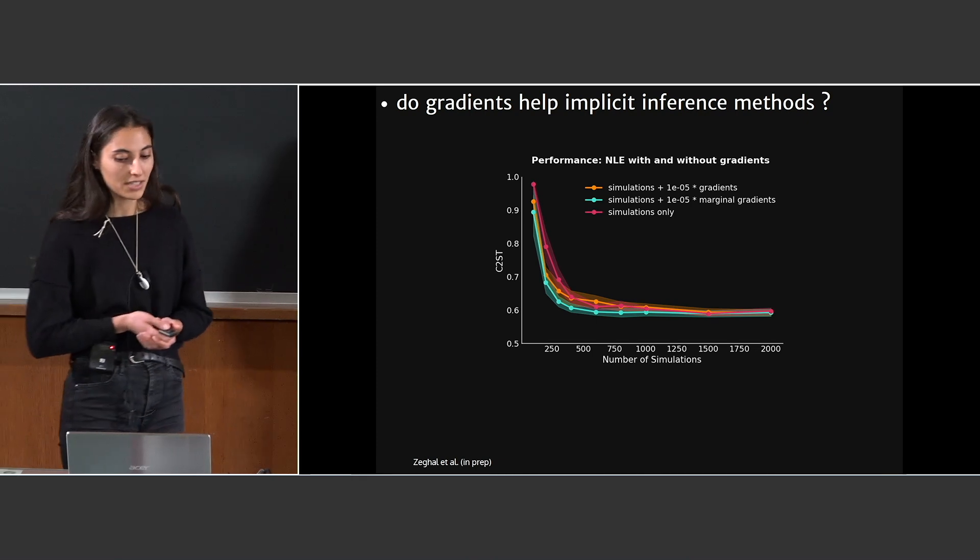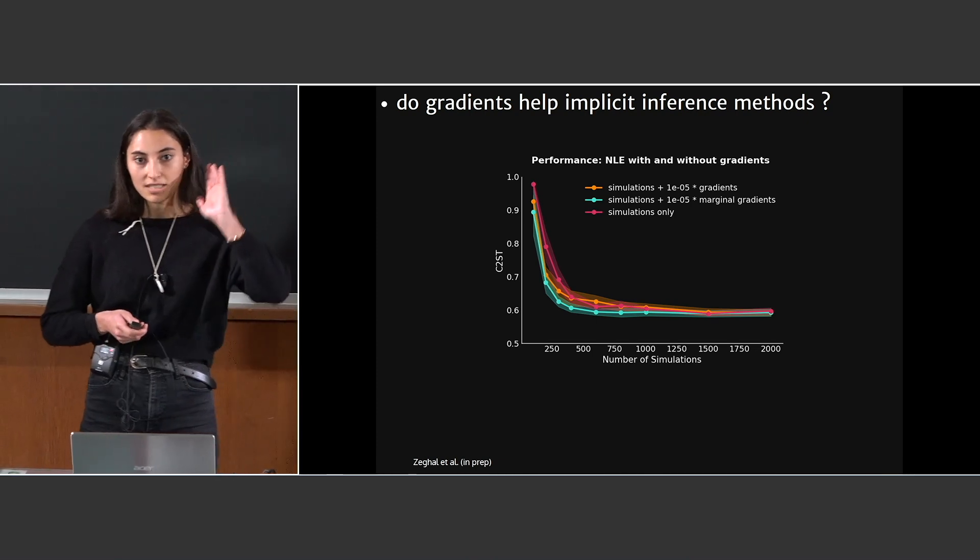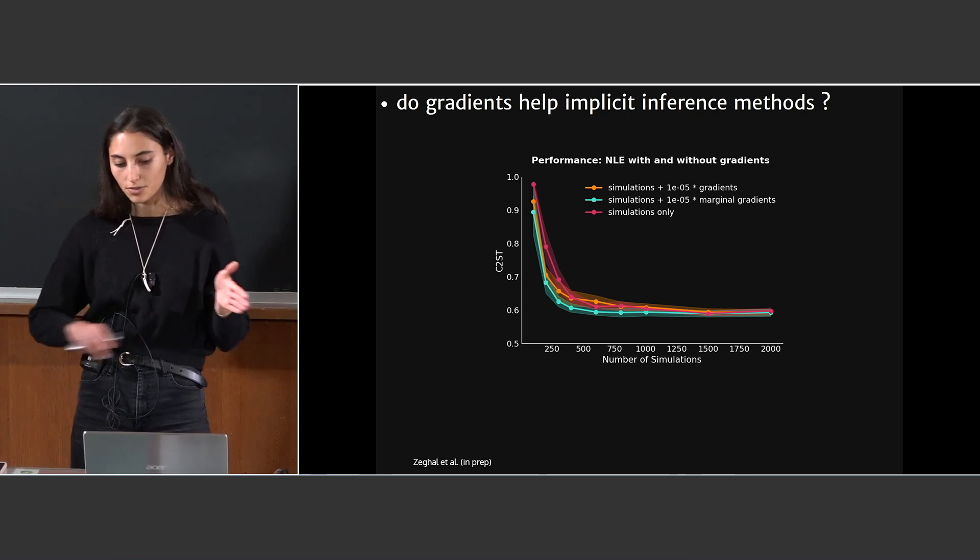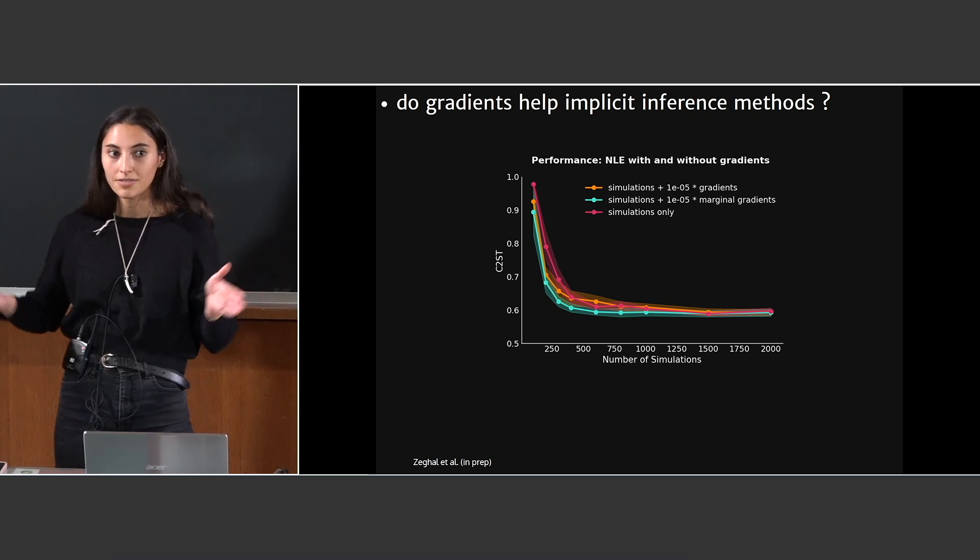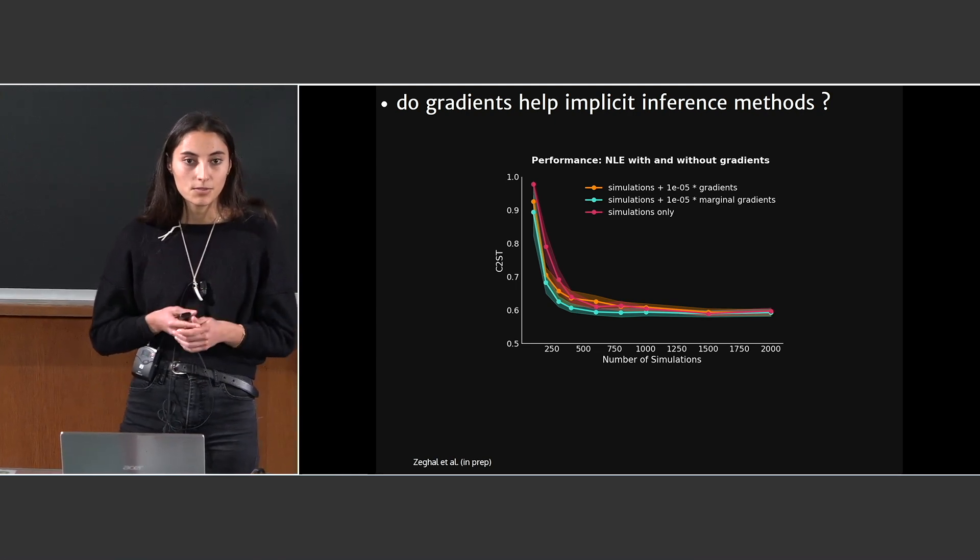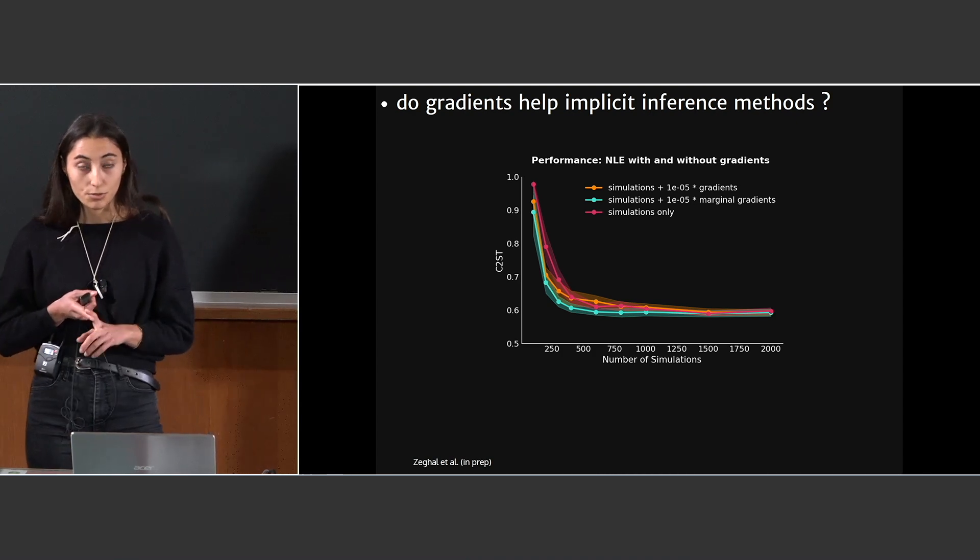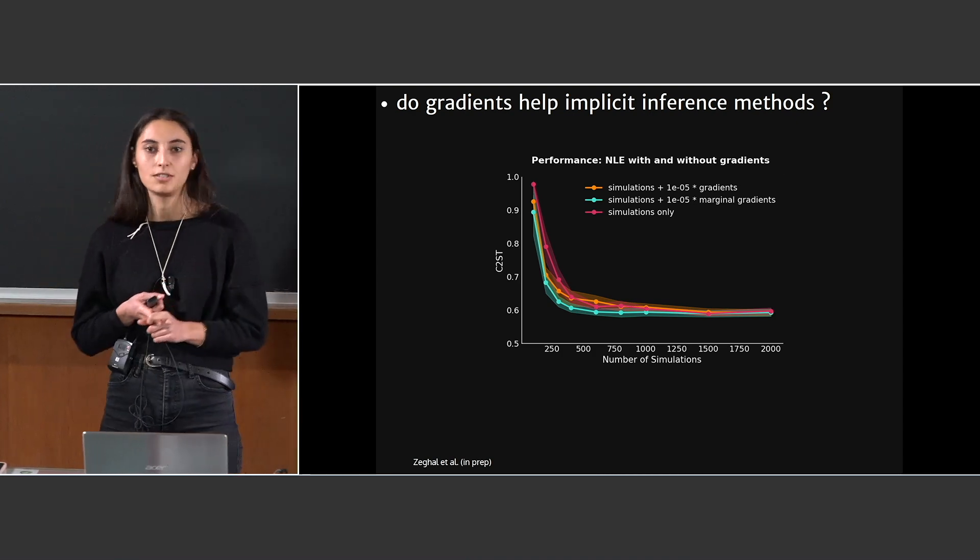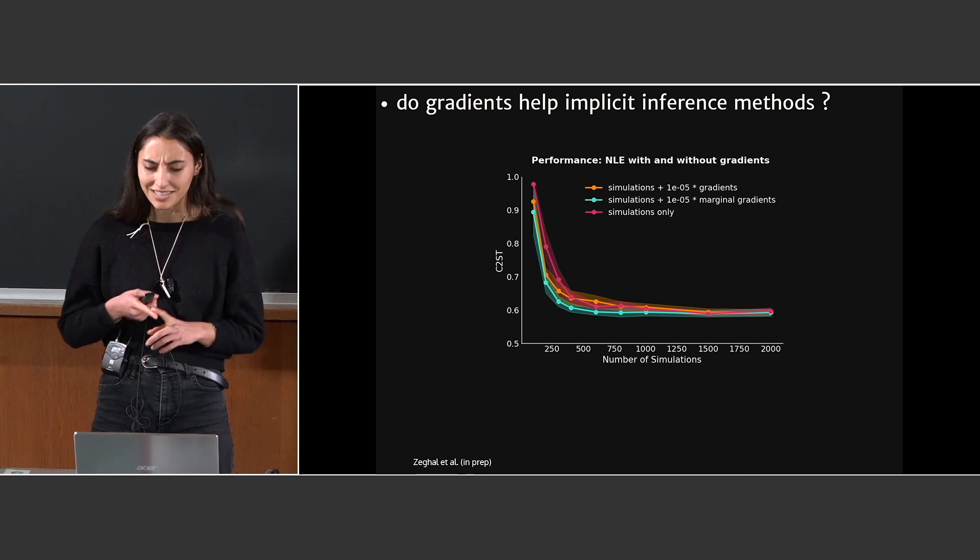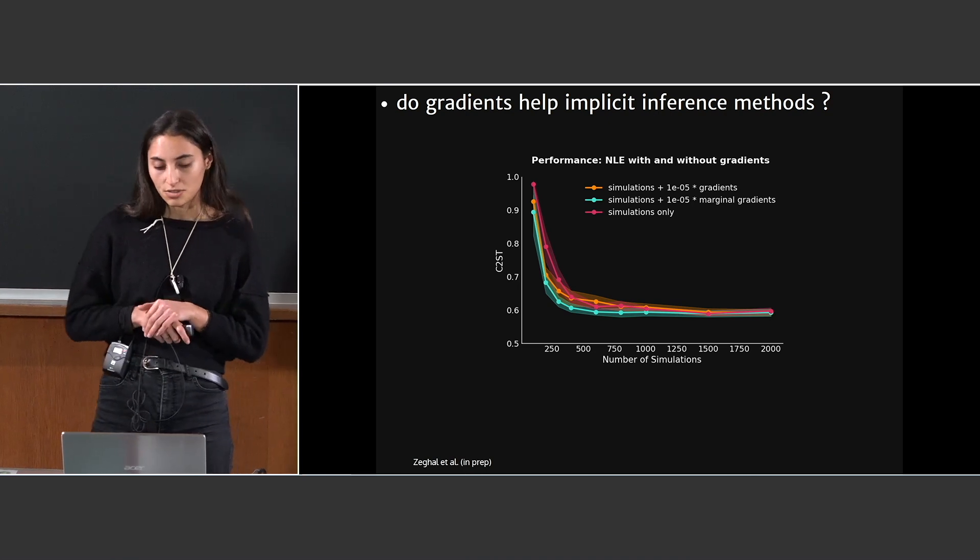The first result is this convergence plot. This is basically the quality of your approximated posterior as a function of the number of simulations. What is important to notice is that the pink curve, where we only use simulation, and the orange one, where you use the simulation and the gradient from the simulator, overlap, meaning that the gradient doesn't bring any additional information.